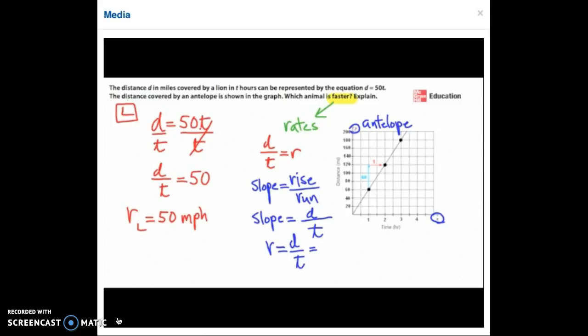at which the antelope is running. Looking at the graph again, we have a change in y values, 60. That's our rise over a given run of 1. And so the rate of the antelope is 60 over 1 or 60 miles per hour.